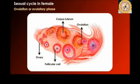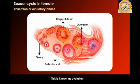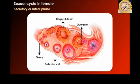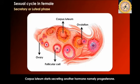The next phase is ovulation or the ovulatory phase. The luteinizing hormone (LH) is responsible for the bursting of the mature Graafian follicle and releasing the egg into the fallopian tube — this is known as ovulation. It occurs around 10 to 14 days into the cycle. Following ovulation is the secretory or luteal phase, in which the corpus luteum — the remnant of the ruptured Graafian follicle — starts secreting progesterone.